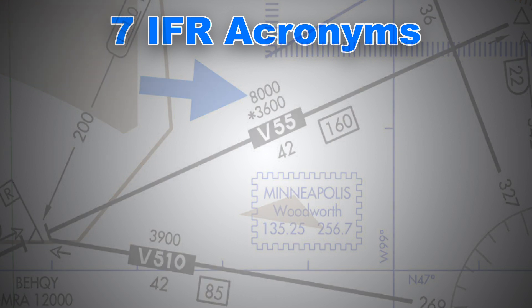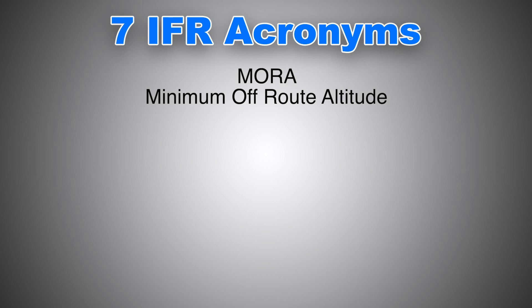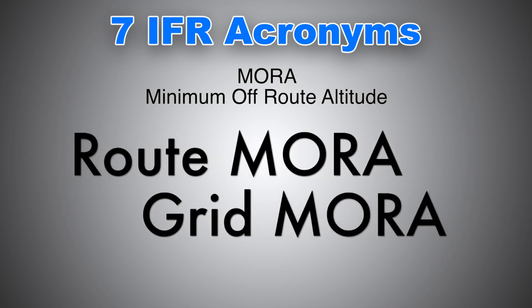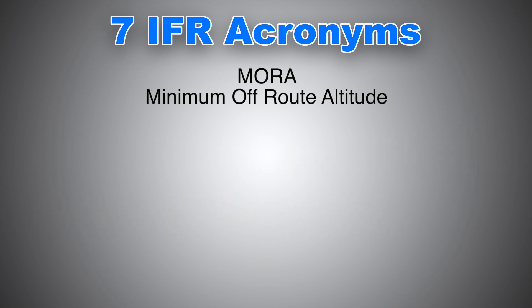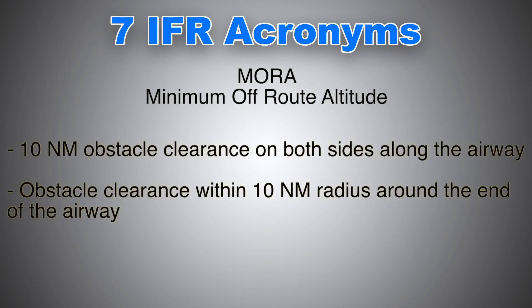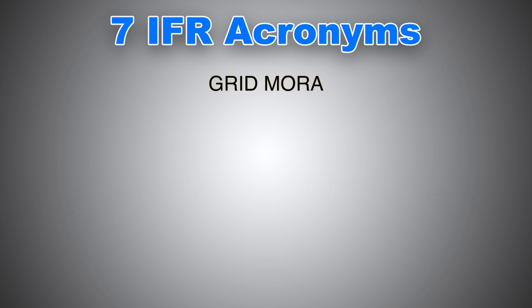MORA is our next acronym — Minimum Off Route Altitude. Please keep in mind that there are two types: route MORA and grid MORA. MORAs give at least 1,000 feet of altitude clearance above terrain and 2,000 feet in mountainous areas. Route MORAs provide obstacle clearance within 10 nautical miles on both sides of the airways and within a 10 nautical mile radius around the end of the airways, usually around the VOR.